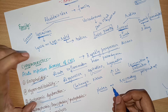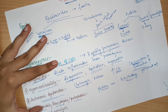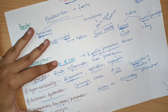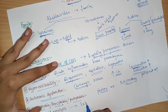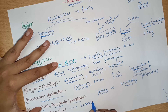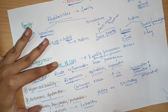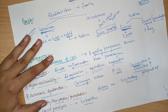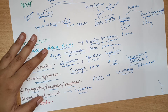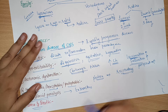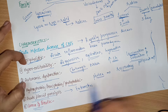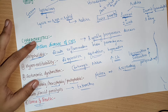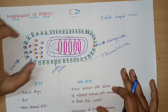The last symptom is acute flaccid paralysis — the patient's extremities get paralyzed. All these symptoms appear in the earliest stages. Then later the patient undergoes coma.